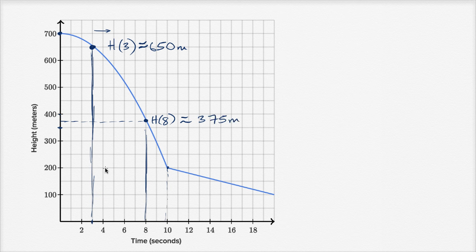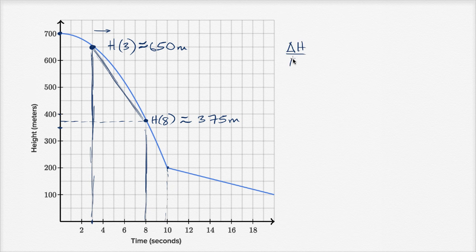375 meters. So what is her average rate of change? Her height decreased on average by approximately — what we want to do is figure out the average rate of change, which you could view as the slope of the line that connects these two points. The slope of this line is her average rate of change — her change in height over the change in time for that interval.